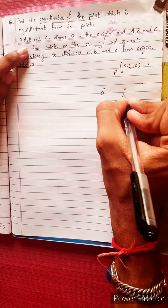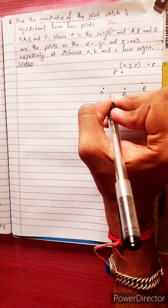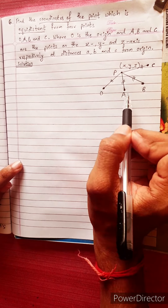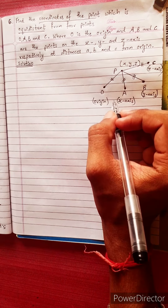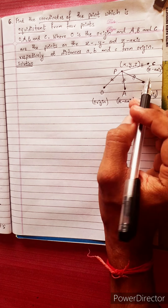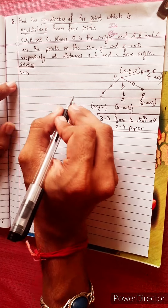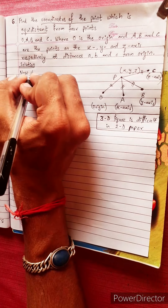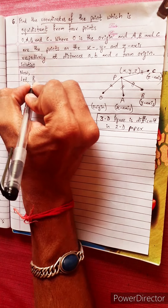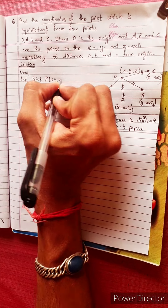The point is O — the origin — point A on the x-axis, point B on the y-axis, and point C on the z-axis. Let the unknown point P be (X, Y, Z).